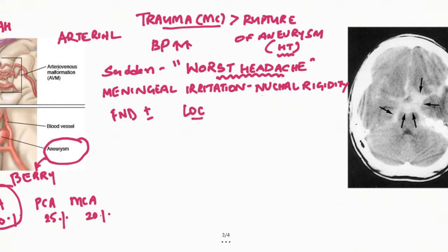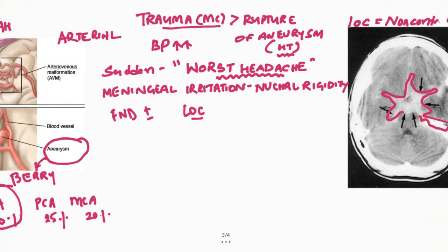The investigation of choice is a non-contrast CT scan. On this scan, you will see the hemorrhage as a hyperdense area filling the cisterns — as shown by the arrows you can see. The hemorrhagic area would appear hyperdense.